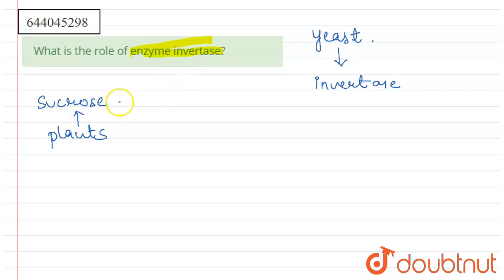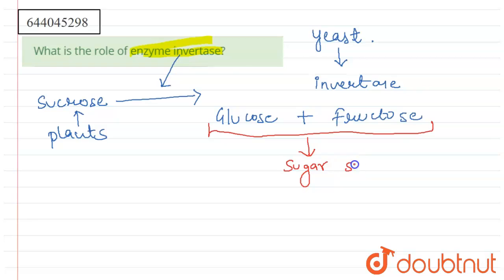Enzyme invertase converts this sucrose into glucose and fructose. The combination of glucose and fructose makes an inverted sugar syrup. This reaction, which is catalyzed by enzyme invertase, is called hydrolysis.